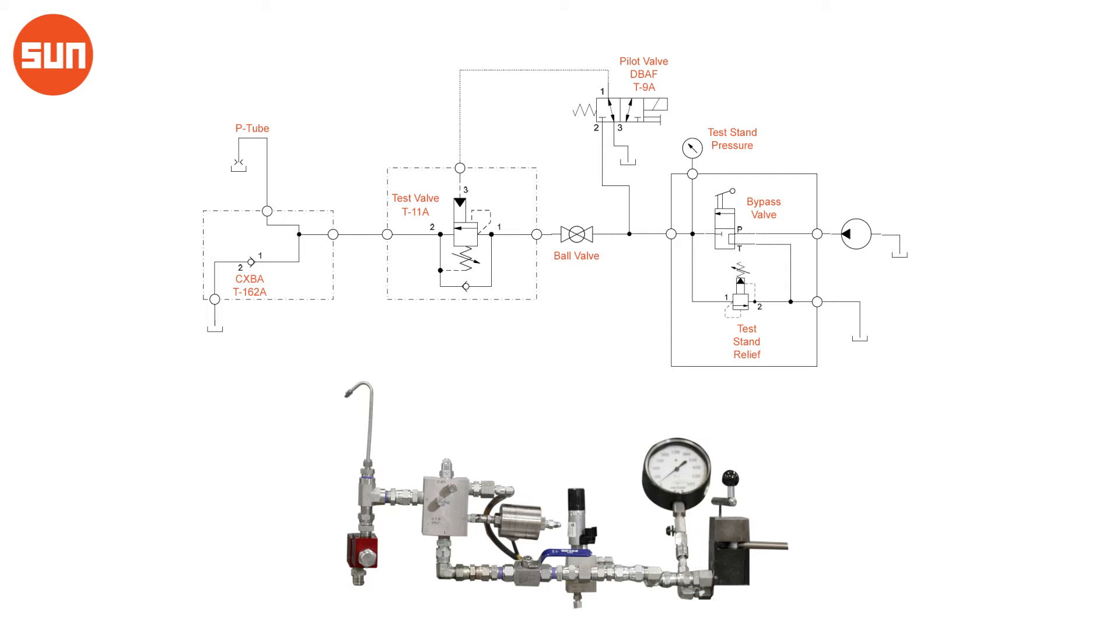We scoot back here, you can see that we have port 3 of the counterbalance valve plumbed to a Sun DBAF switching valve that will divert flow through the pilot section and allow us to open the valve.